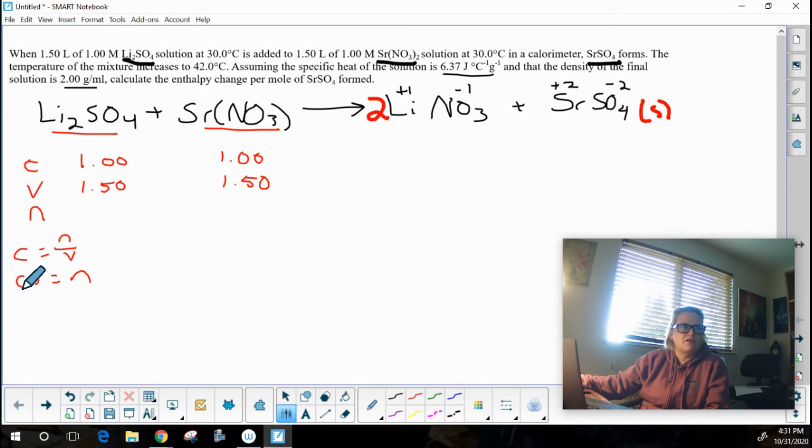And so using C equals N over V or multiplying C V equals N. If I multiply the concentration times the volume, I will get the number of moles of each of these to be 1.50.